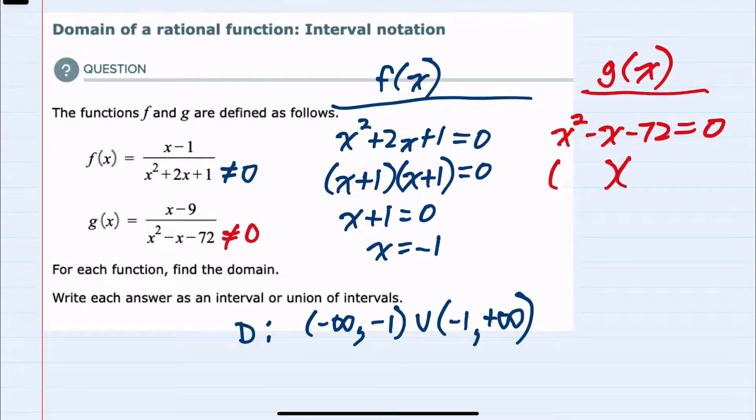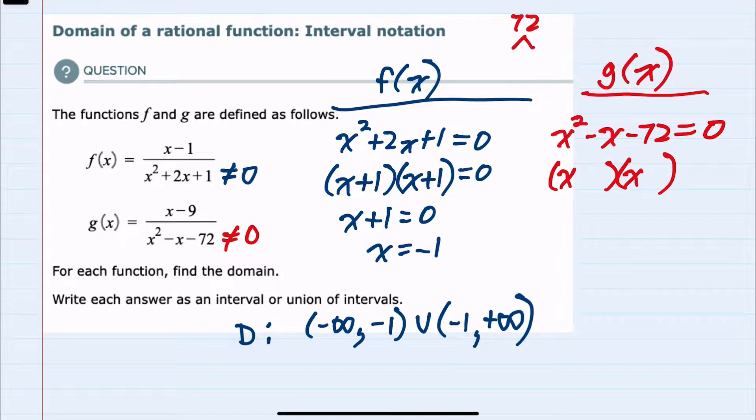Again, factoring on the left hand side, since the leading coefficient is 1, it would have to be x and x. Numbers that multiply to 72 would either be 72 and 1, 2 and 36, 3 and 24, 4 and 18, 6 and 12, or 8 and 9.